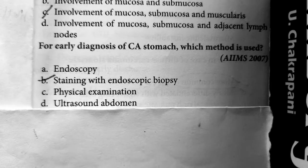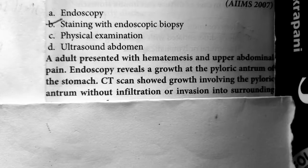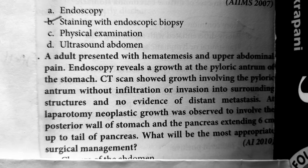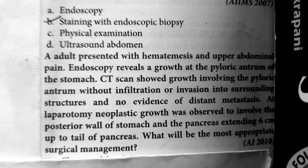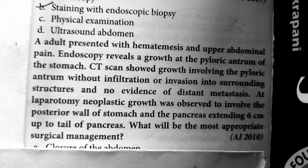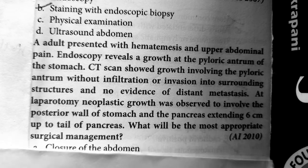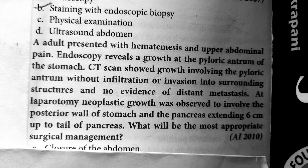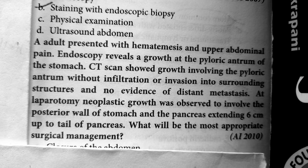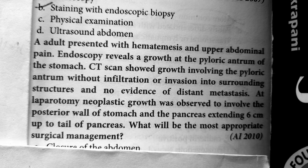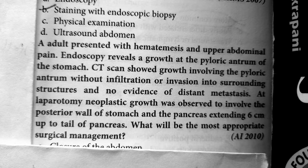Question 6: An adult presented with hematemesis and upper abdominal pain. Endoscopy reveals a growth in the pyloric antrum of the stomach. CT scan showed growth involving the pyloric antrum without infiltration or invasion into surrounding structures and no evidence of distant metastasis. At laparotomy, neoplastic growth was observed to involve the posterior wall of the stomach and pancreas extending 6 cm up to the tail of the pancreas. What is the most appropriate surgical management? The patient has neoplastic growth in the stomach involving the pyloric antrum.